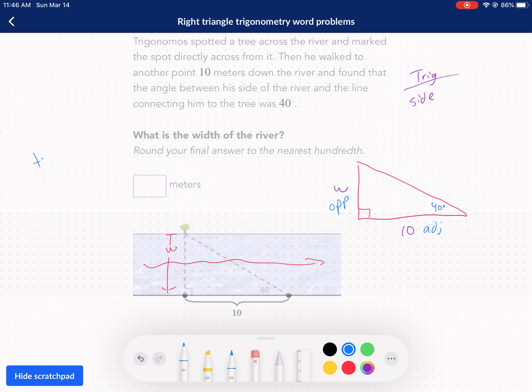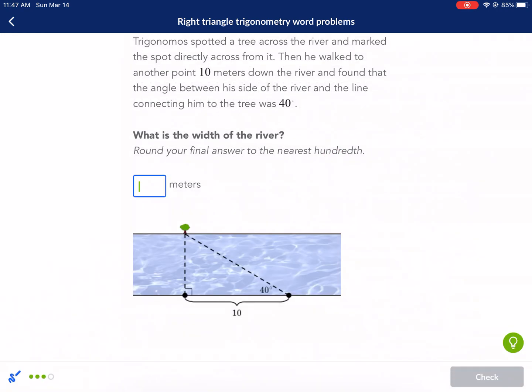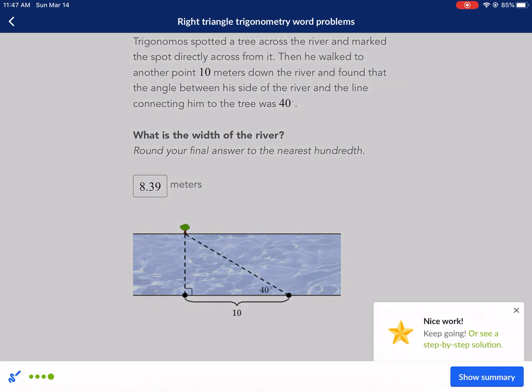We know that we're going to be using tangent because that is opposite over adjacent. So the tangent of 40 degrees is going to be equal to our opposite side, W over 10. I like to put it over one and then cross multiply. So I have tangent of 40 times 10 equals W. So I just go straight to my calculator, tangent 40 times 10. And I get 8.39 meters equals W. And I'm going to round to the nearest hundredth. And that's already rounded because my answer was 8.390. 8.39 is going to be my answer. Check it.